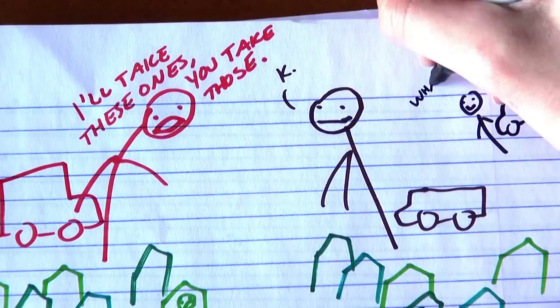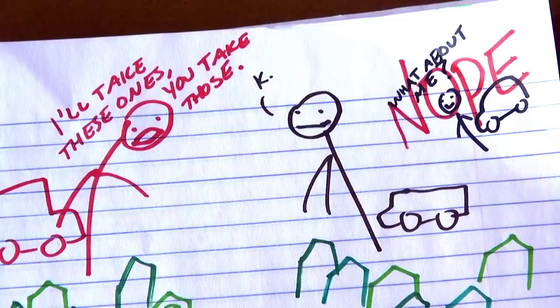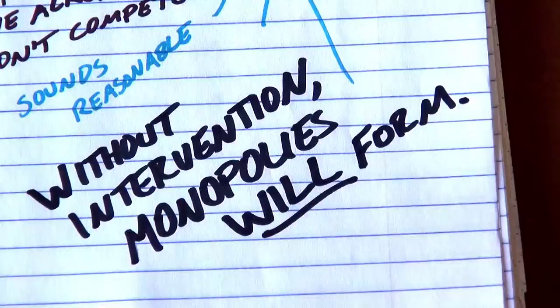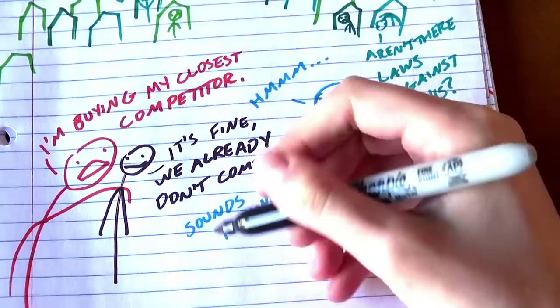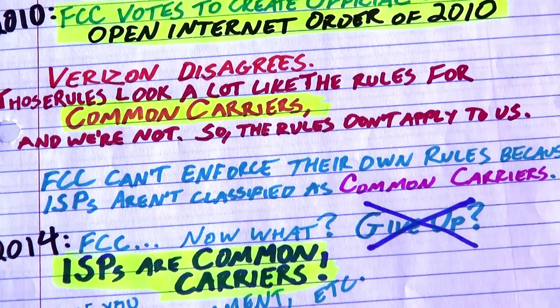Comcast is trying to get approval to buy Time Warner Cable, and it's completely nuts that the FCC is even considering it. We have antitrust laws because it's one of those beautiful mathematical inevitabilities that without intervention, monopolies will form. If you think stopping the biggest ISP from merging with the second biggest ISP is what antitrust laws are made for, please speak out against this merger and mergers like them.